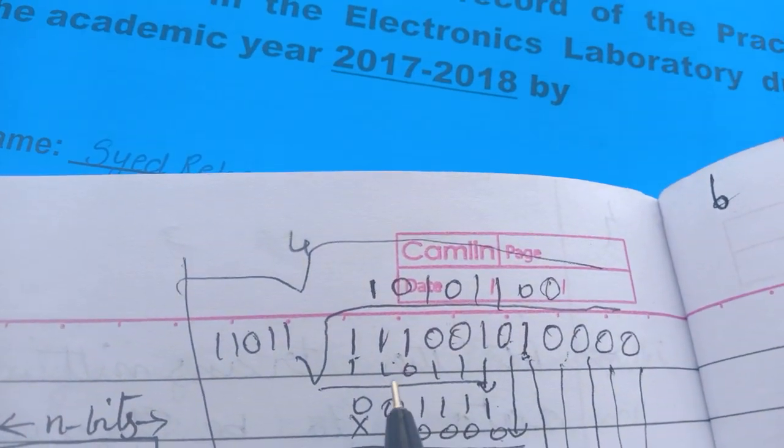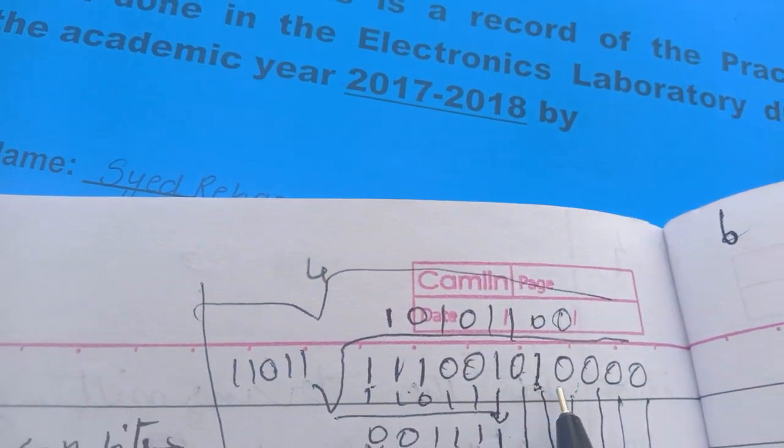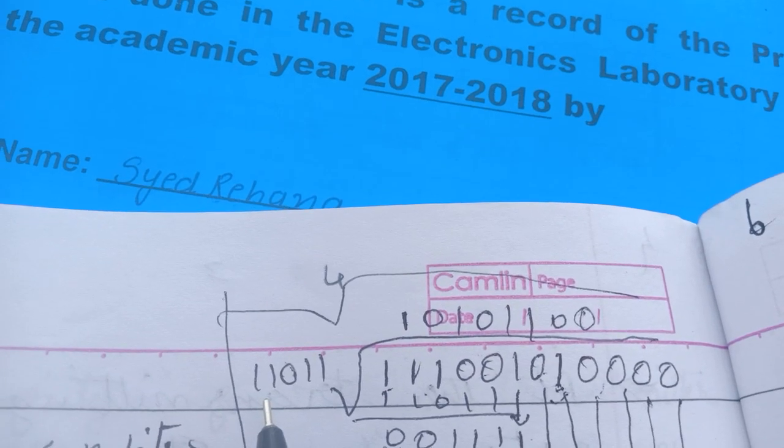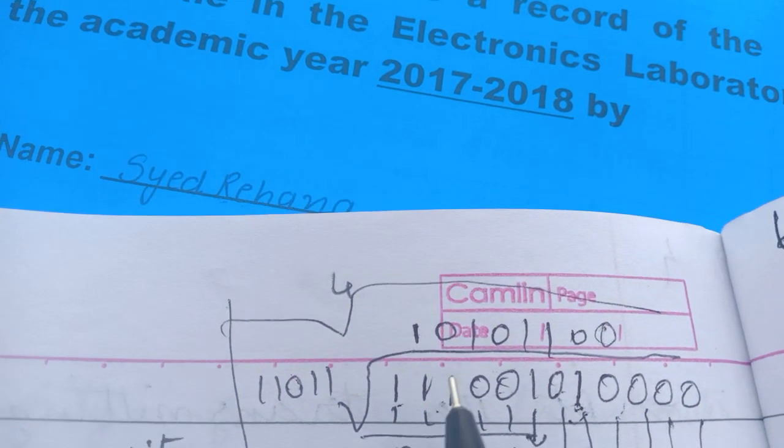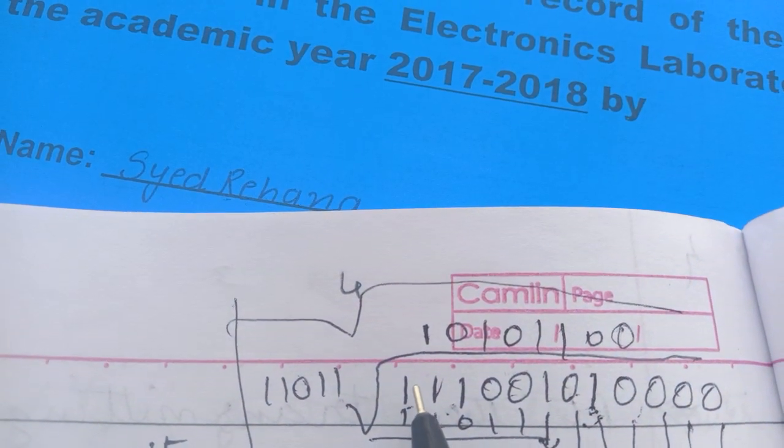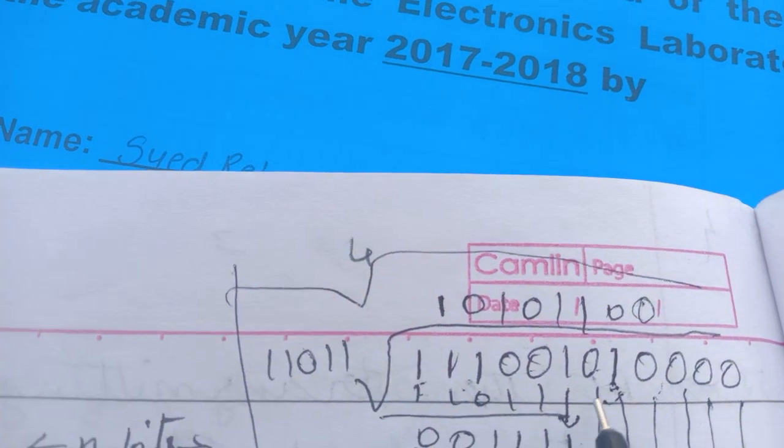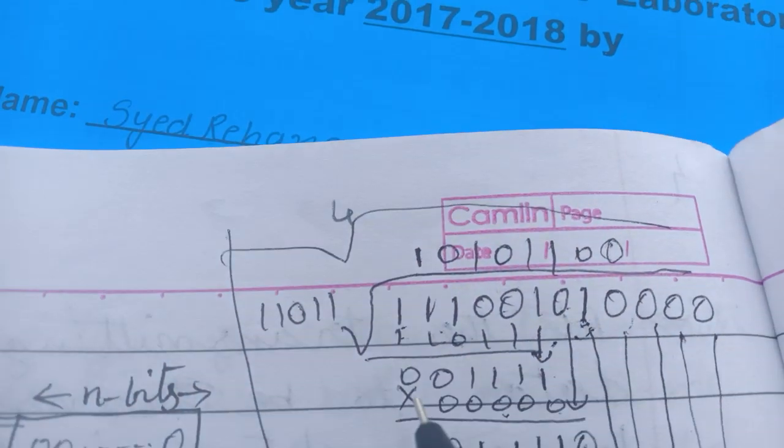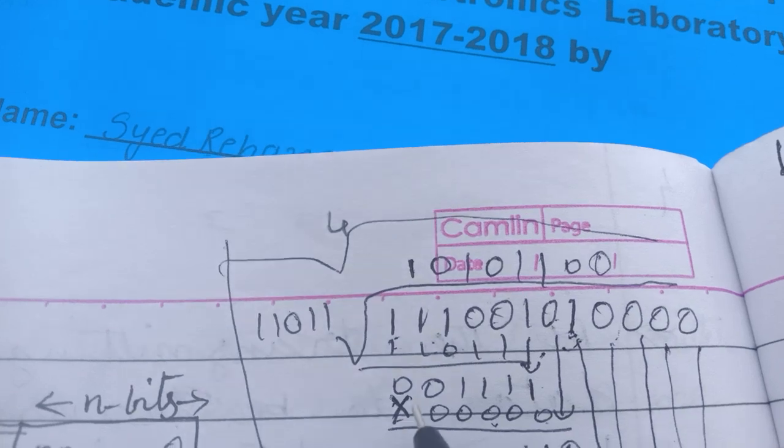The data to be transmitted is 1100101 and the divisor is 110011. So first you divide this, multiply this one with one, 110011. Take the reminder, then neglect this first term.